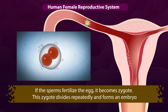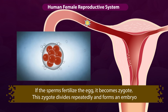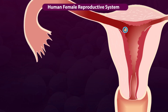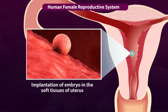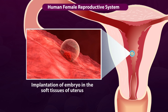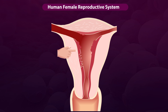This zygote divides repeatedly and forms an embryo. This embryo moves towards the uterus and gets implanted in the wall of the uterus. The lining of the uterus grows new tissues and blood vessels to accommodate the embryo.